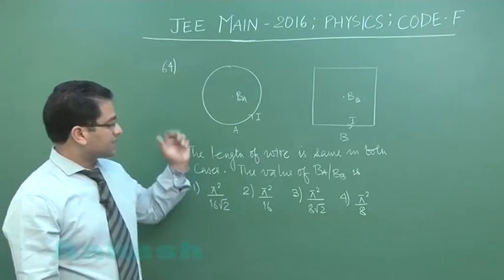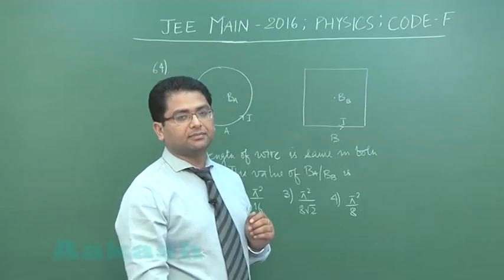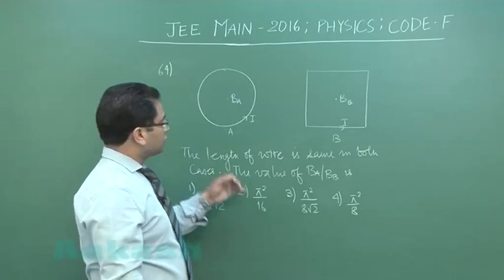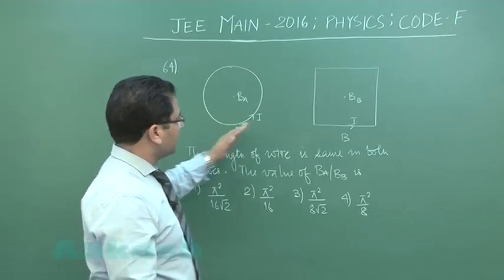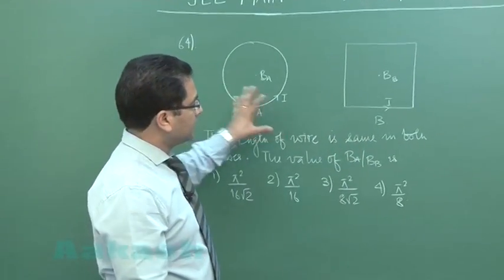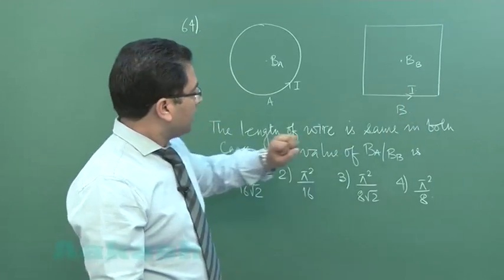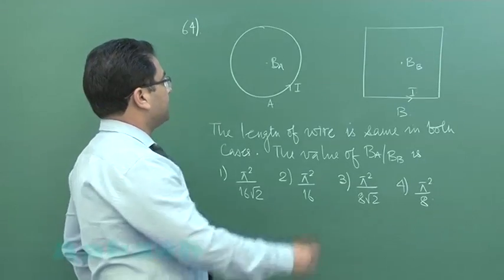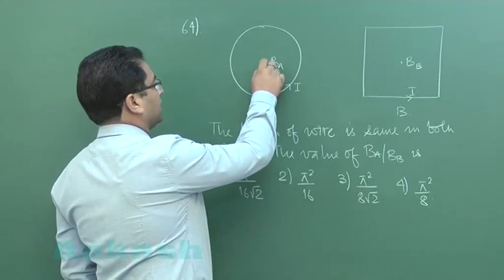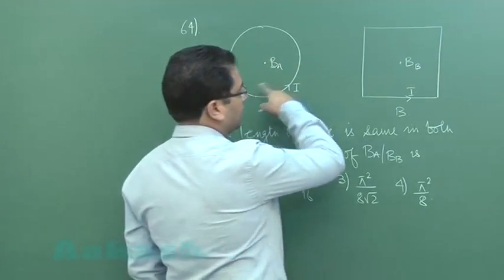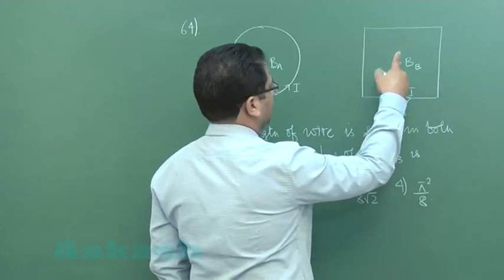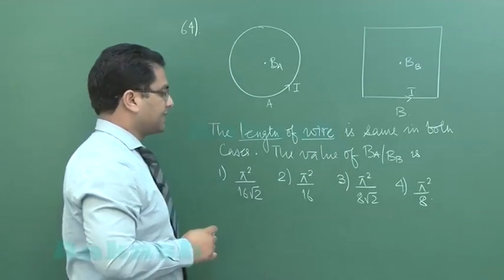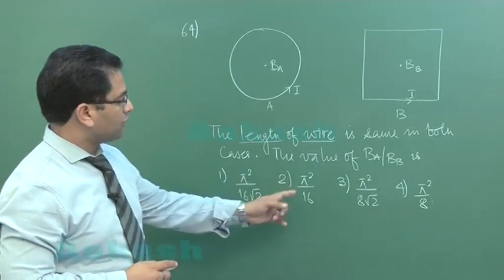Okay, question number 64 from magnetism - a simple direct formula based question. There are two arrangements, arrangement A and B. This is a circle and this is a square. Both the arrangements carry identical current I. Ba is the magnetic field at the center here and Bb is the magnetic field at this particular center. You got to be careful with this part as well. Length of the wire is same.